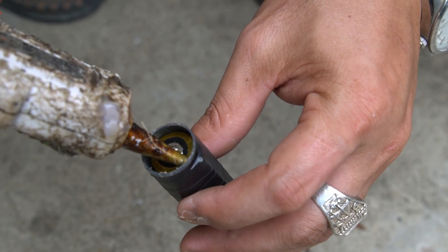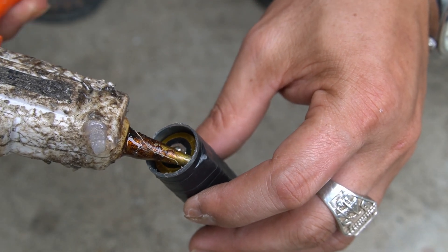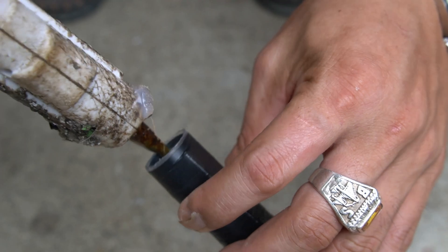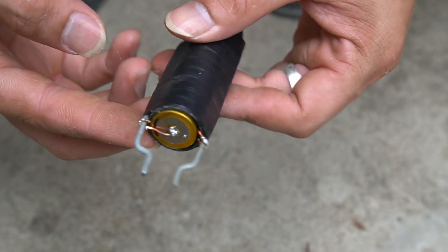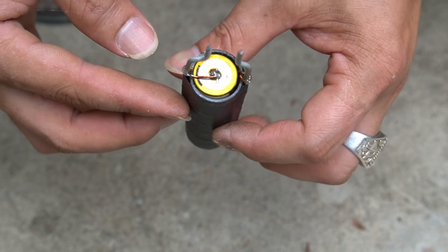Then use specialized glue to fix the battery to the syringe. I have completed the mini welder, and I will check how it works.